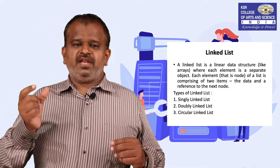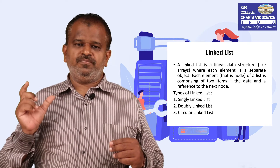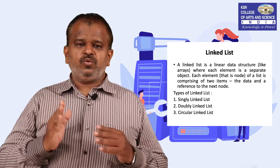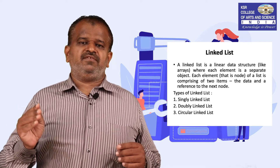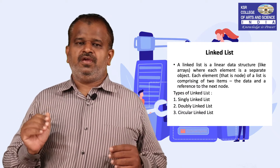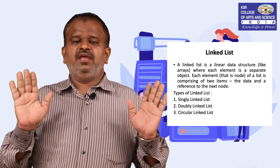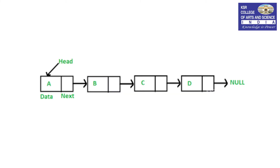Each and every data element in a linked list is called a node. A node is partitioned into two parts: the first partition is meant for storing data and the second partition is meant for storing the reference of the next node. This is the general view of a linked list. In a singly linked list, each and every element is called a node, and the node is divided into two parts — the first part is meant for data and the second part is meant for storing the reference of the next node.